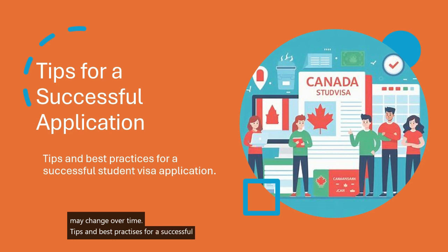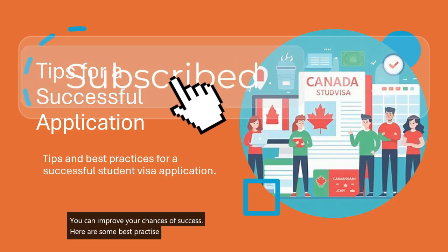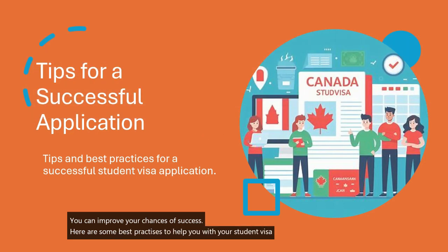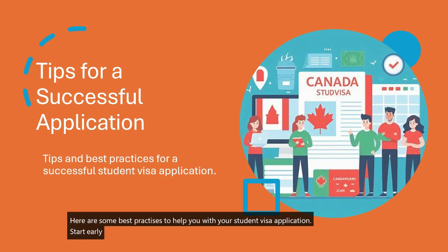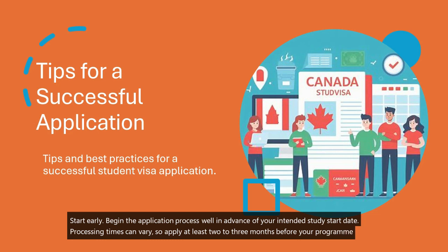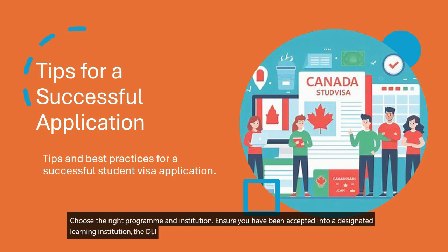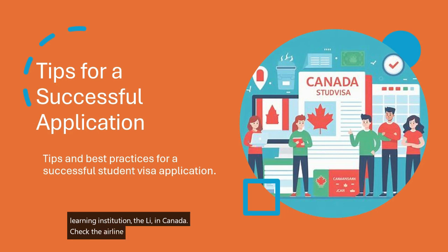Tips and best practices for a successful student visa application for Canada: applying for a student visa can be a complex process, but with careful planning and attention to detail, you can improve your chances of success. First, Start Early: begin the application process well in advance of your intended study start date. Processing times can vary, so apply at least two to three months before your program begins. Second, Choose the Right Program and Institution: ensure you have been accepted into a Designated Learning Institution (DLI) in Canada — check the DLI list on the official Government of Canada website.